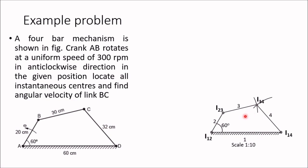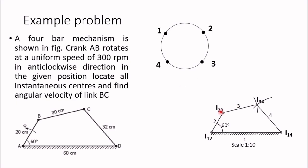By visual inspection, locate some instantaneous centers. The joint of links 1 and 2 is I12, the joint of links 2 and 3 is I23, the joint of links 3 and 4 is I34, and the joint of links 1 and 4 is I14. Draw a circle with four points for the four links, and connect the pairs that correspond to known instantaneous centers: lines from 1 to 2, 2 to 3, 3 to 4, and 1 to 4.